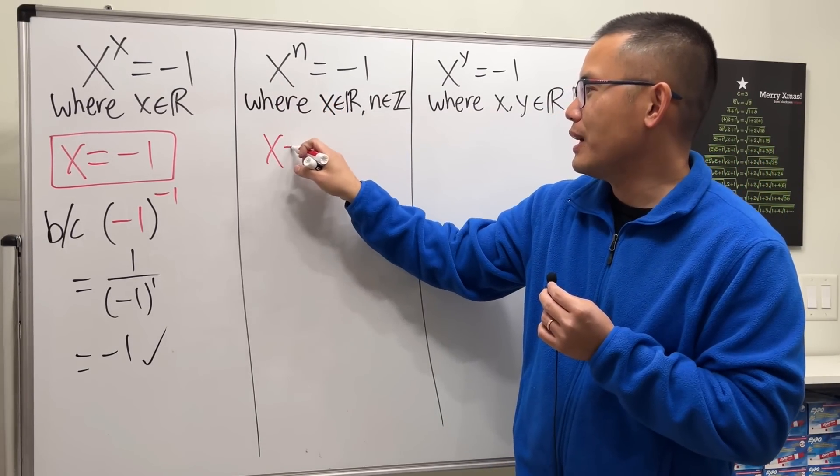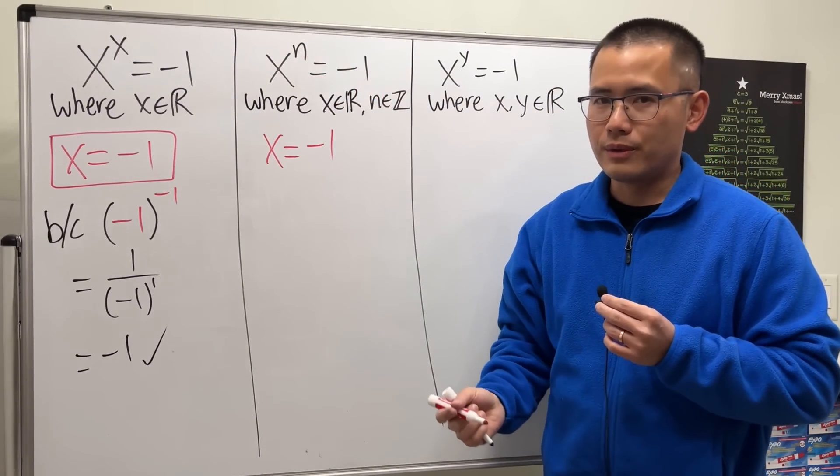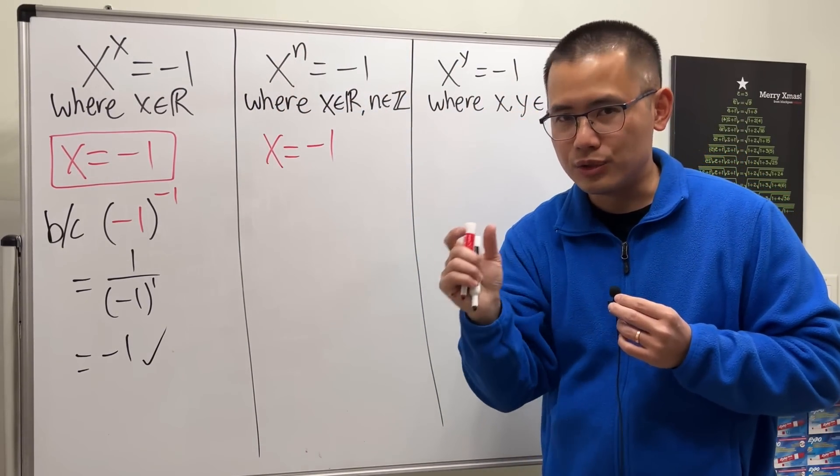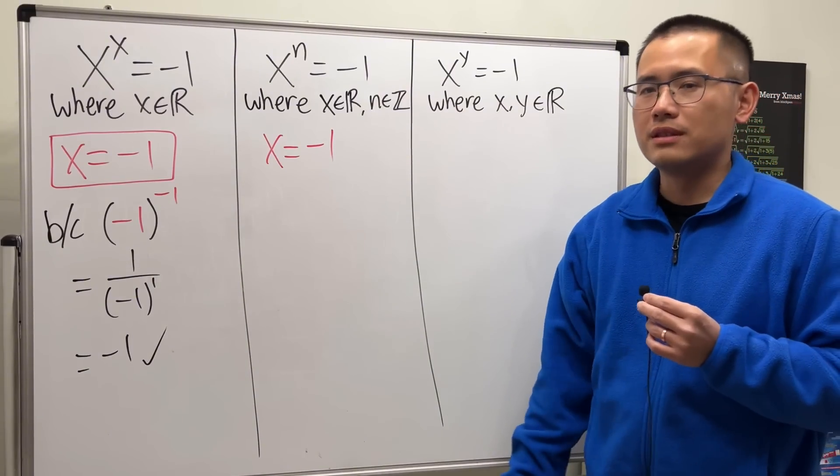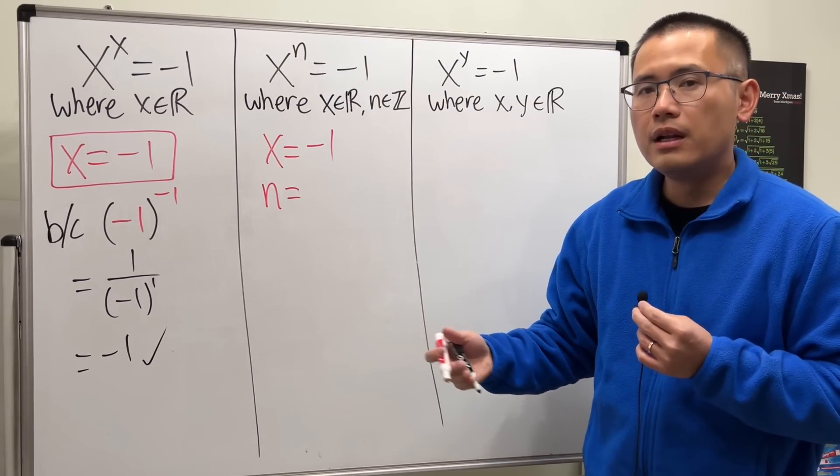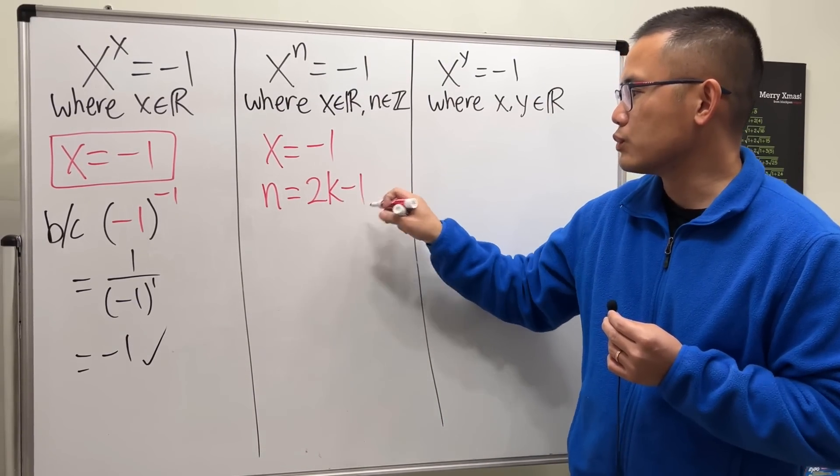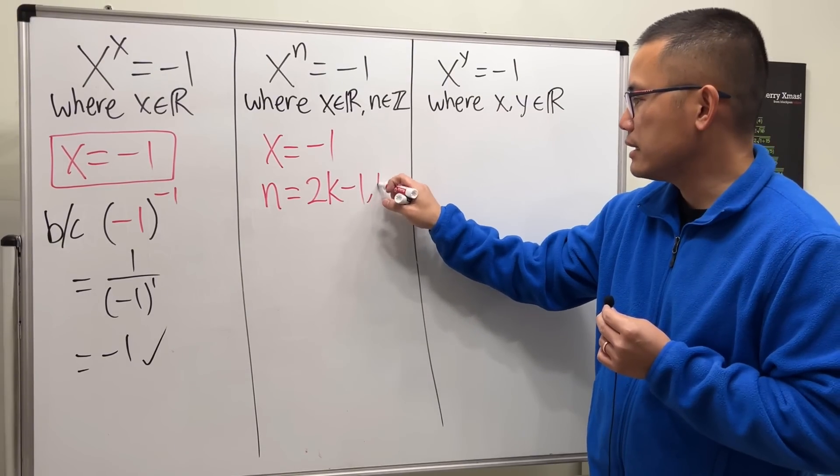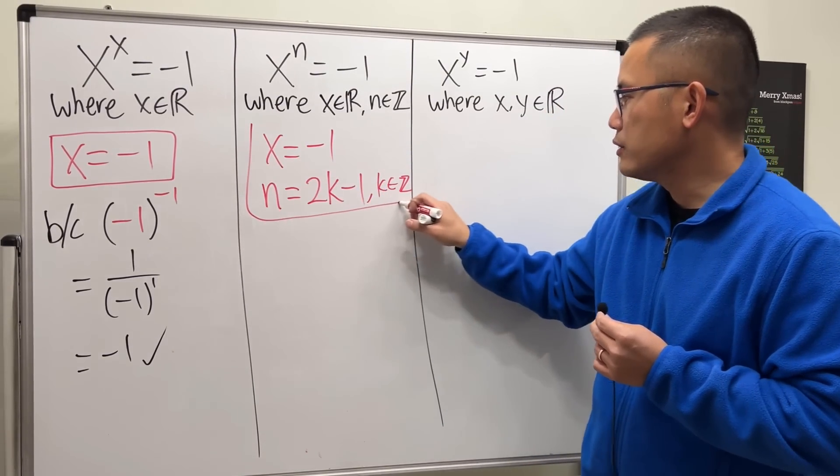The base x will still have to be negative 1. But to what power, though? Well, here's the key. If we have a negative 1 to an odd integer, an odd integer, then the result will give us negative 1. So I will just say n equals an odd number. And to write odd number, I'll just put this down as 2k minus 1. And this is a form of an odd number. And right here, I should indicate that k is an integer.